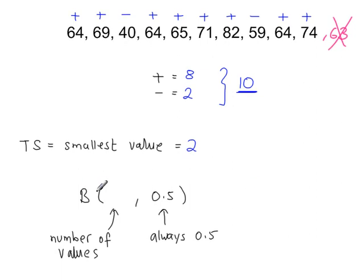Here's the binomial table. 10 would be the number of trials. This value here is always 0.5. A common mistake is to take the significance level of the test and put it here — that's wrong. This value is always 0.5. The reason being: if you select a value at random, it's got a 50% chance of being more than the median and a 50% chance of being less than the median, because the median is right in the center. That's where that 0.5 comes from, so it never changes — it's always 0.5.